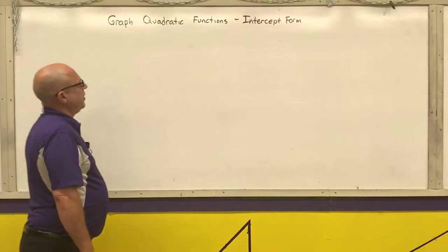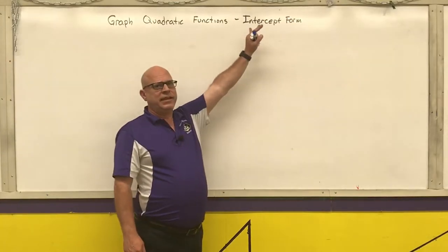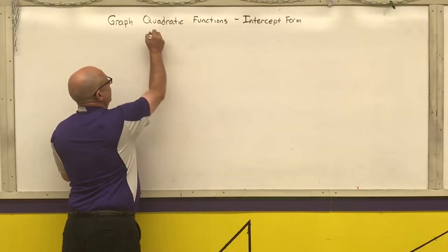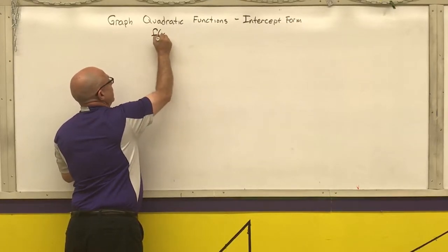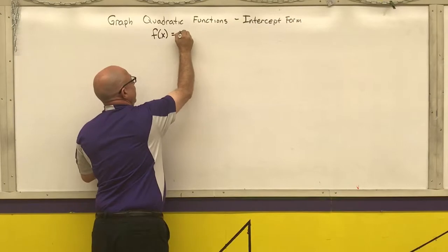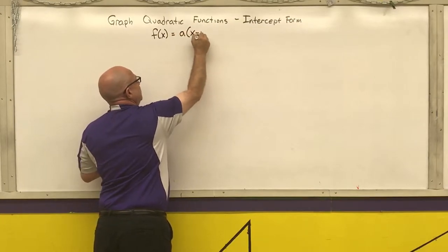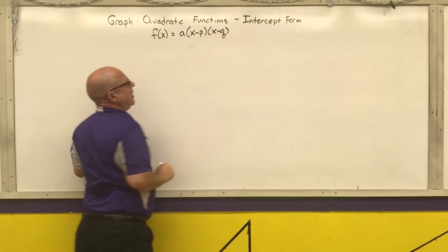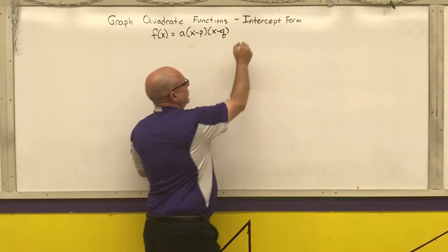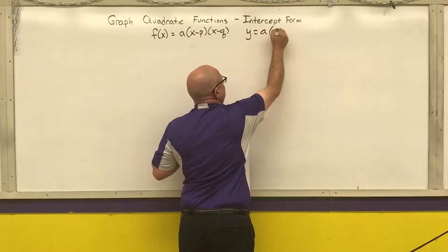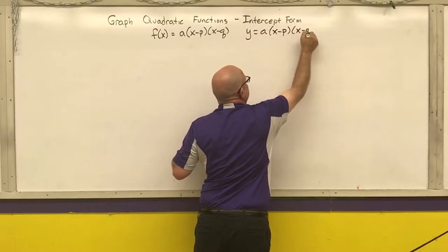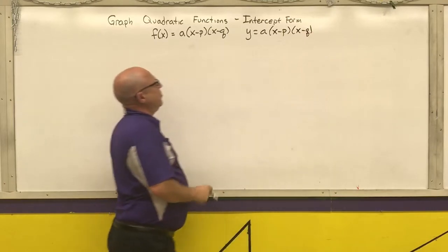Our next method for graphing quadratic functions is if they are in the intercept form. A quadratic function is in the intercept form if it looks like a constant times two linear binomials.